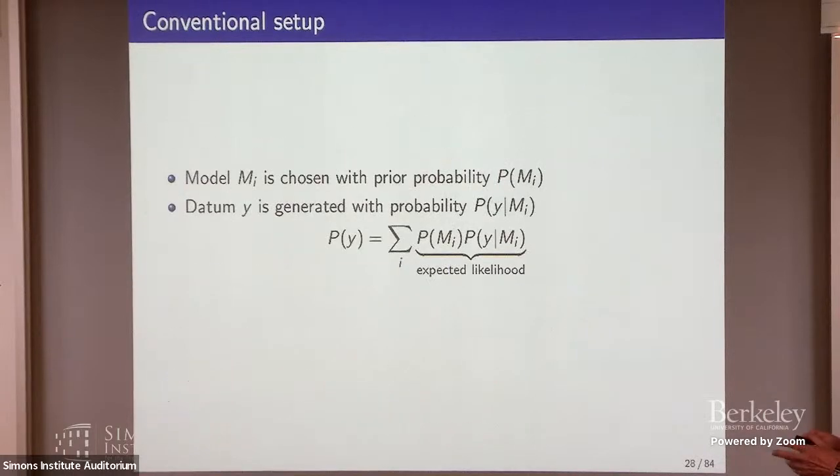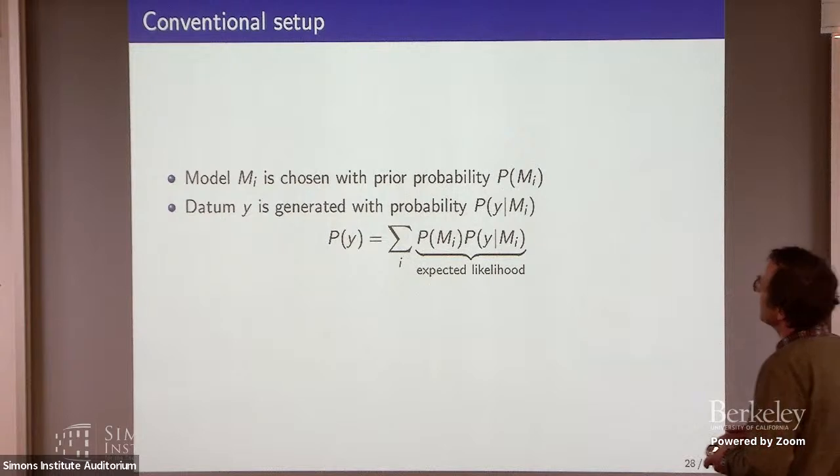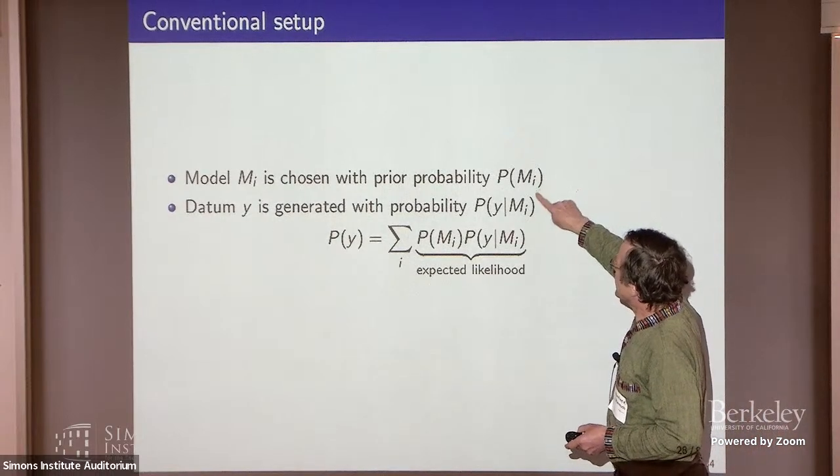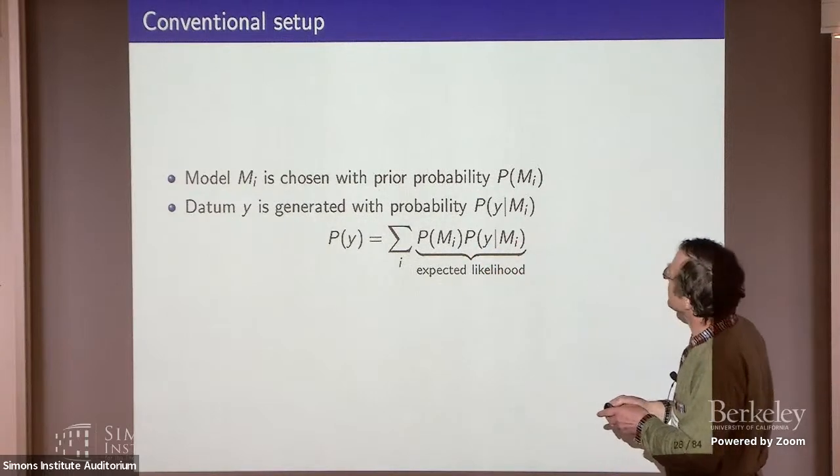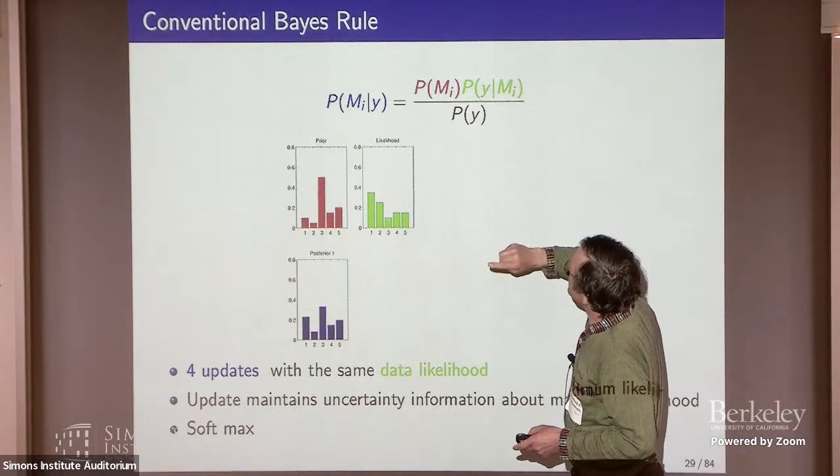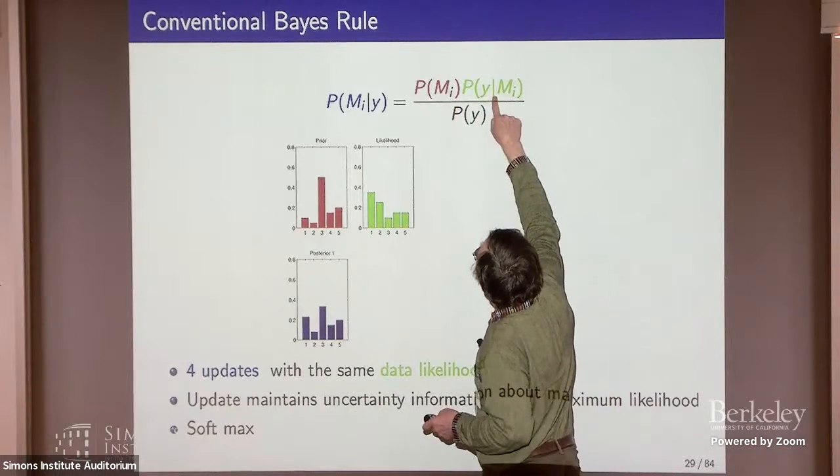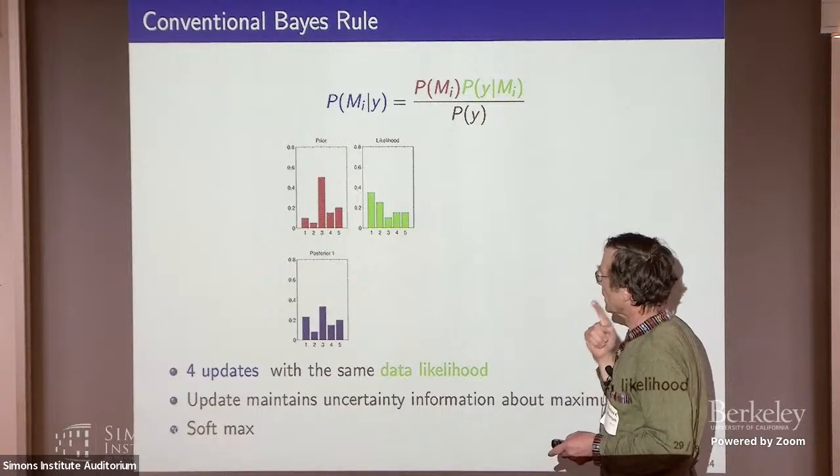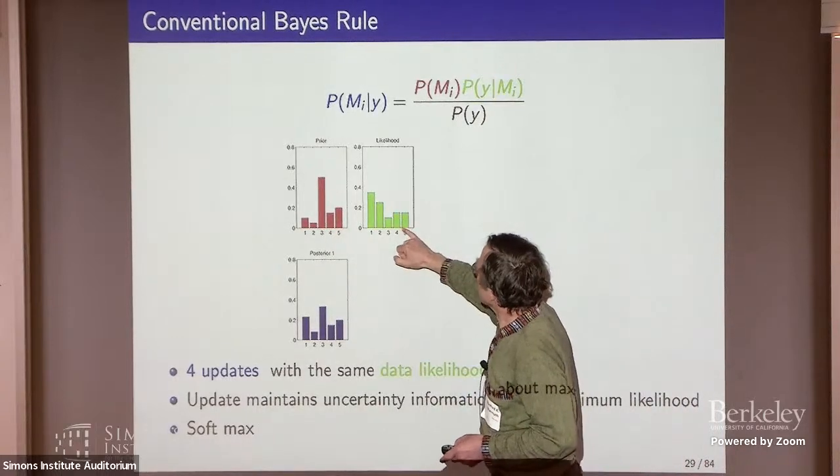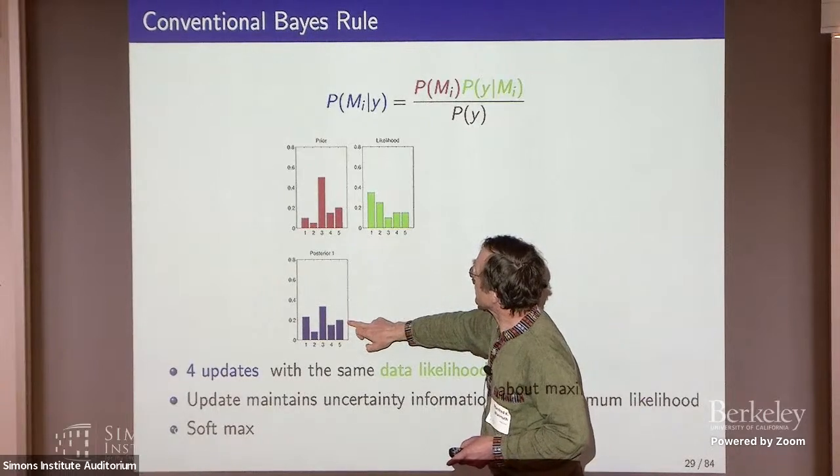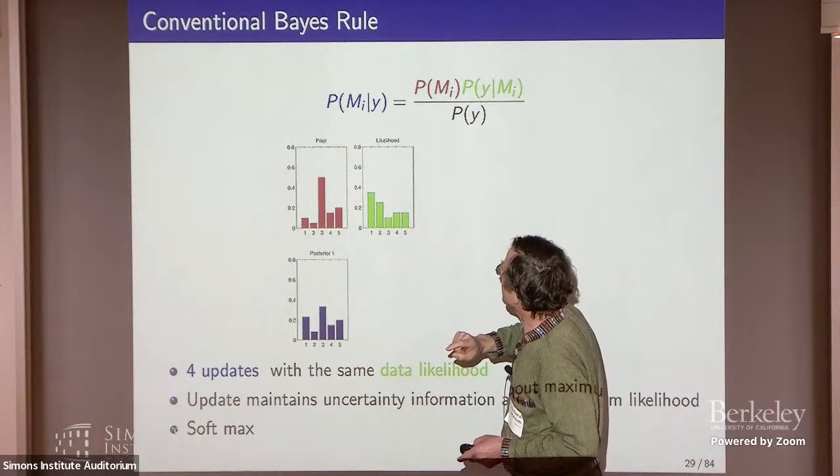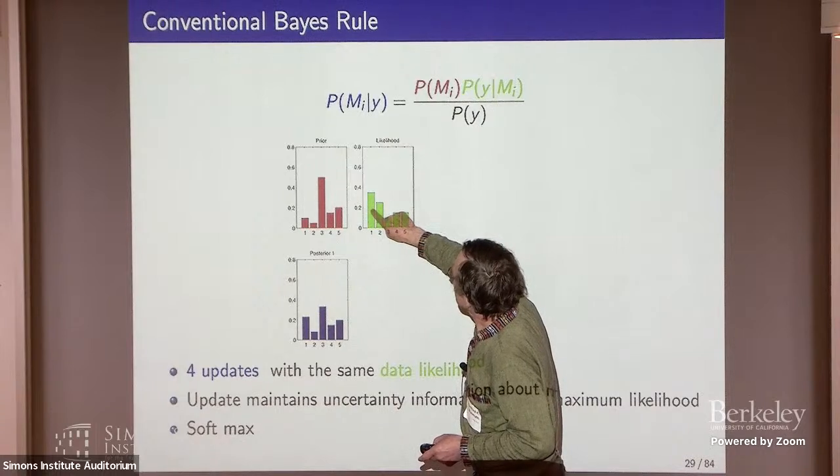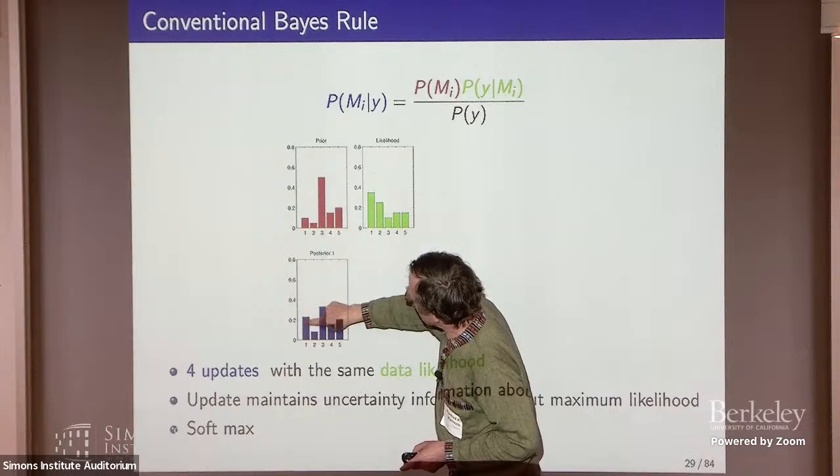So now I'm going to explain the normal Bayes rule in pictures. You have some models chosen with some prior probability, and then a datum is generated. It's a data likelihood. And then this would be the theorem of total probability, which sits down here. And the Bayes rule is this. You take prior times data likelihood over normalization in pictures. So this is your prior. This is your data likelihood. This is the first posterior. So I multiply this times this, this times this, this times this, I normalize and I end up with this. Notice that there was a high likelihood over here. So this bar is pulled up. And if we keep on iterating that it's going to go up higher and higher.